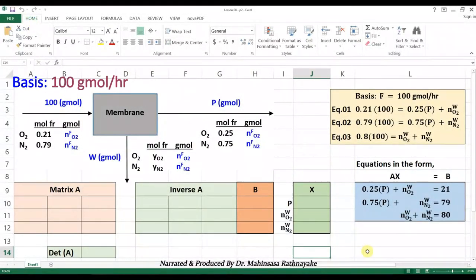For this problem, if we choose a basis as the feed stream is 100 gram mole per hour, then the 9 equations can be simplified into 3 equations. You can see the 3 equations on the screen now.